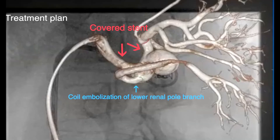We decided to place a covered stent extending from the mid renal artery into the outflow branch supplying the upper two-thirds of the kidney, and to perform coil embolization of the lower renal pole branch to avoid endoleak after successful aneurysmal exclusion.